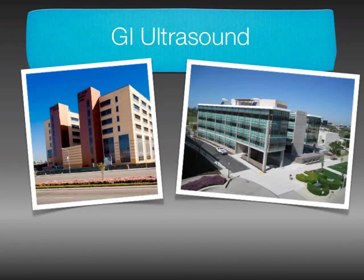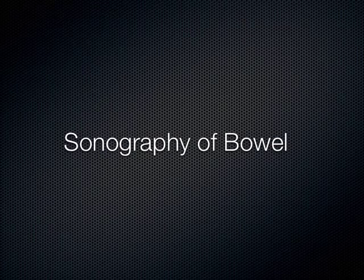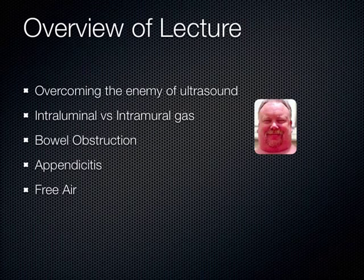We're going to talk now about the ultrasound of the bowel and then move into the gallbladder. Normally when you talk about ultrasound of the bowel, people go, 'what?' There's air in the bowel. Air is the enemy of ultrasound. But actually there's a lot of things you can see with ultrasound of the intestines. What you need to learn is how to overcome the enemy of ultrasound, which is the bowel gas.